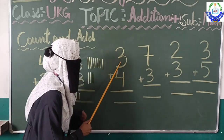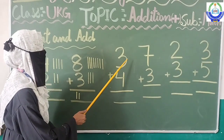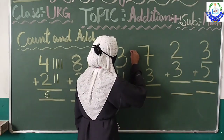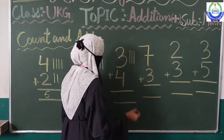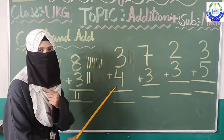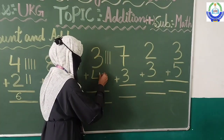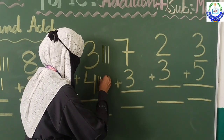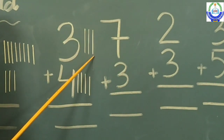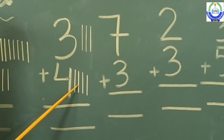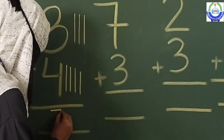Move to the next number. Which number is here, students? This is three. Let's draw three lines: one, two, three. Next, which number is here? This is four. We will draw four lines: one, two, three, and four. Now let's count them all: one, two, three, four, five, six, and seven. We will write here: seven.